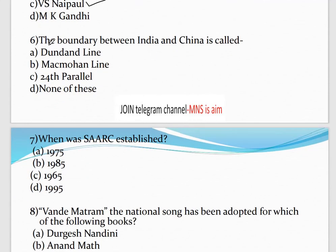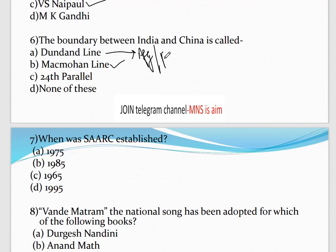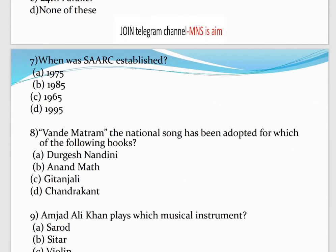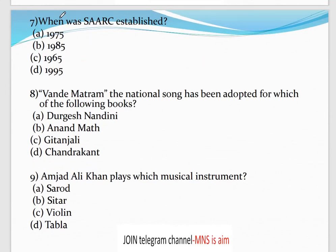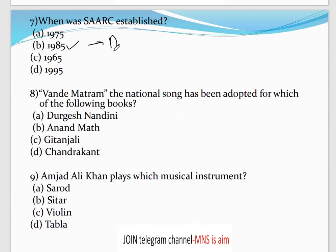Question number 6: The boundary between India and China is called the McMahon Line. Question number 7: When was SAARC established? SAARC was established in 1985 and its headquarters is in Dhaka, which is the capital of Bangladesh.